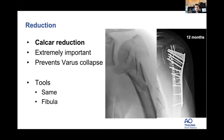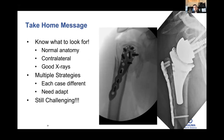Take-home message: having the most reduction strategies is helpful because every case is different. You have to know what to look for to reduce them adequately. The eye test doesn't come quickly — know the normal anatomy, get contralateral X-rays if needed, make sure you have good imaging. We always get preoperative imaging before we prep and drape. The goal is to avoid a malreduction so you don't end up having to do a revision arthroplasty.